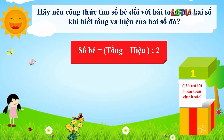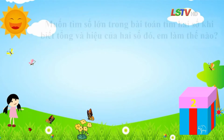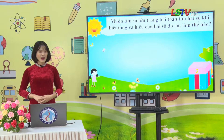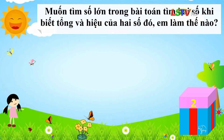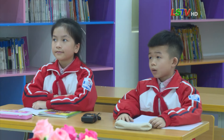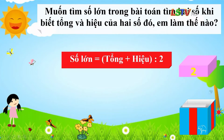Hộp quà số 2 có bí mật gì nhỉ? Chúng ta đến với câu hỏi số 2: Muốn tìm số lớn trong bài toán tìm 2 số khi biết tổng và hiệu của 2 số đó, em làm thế nào? Thưa cô, muốn tìm số lớn, em áp dụng công thức: số lớn bằng (tổng cộng hiệu) chia 2. Cô đồng ý với câu trả lời của em. Em thật là giỏi.